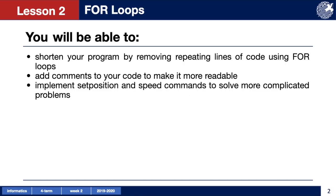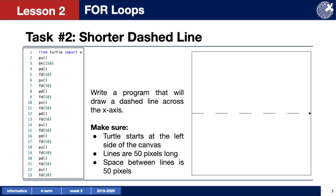In this video we're going to learn how to shorten your program by removing repeating lines of code using for loops. Also we will add comments to your code to make it more readable and implement set position and speed commands to solve more complicated problems. In exercise number two from the previous lesson we drew a dashed line across the x-axis. When you completed this task you wrote 23 lines of code to get the result we are looking for.